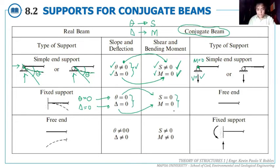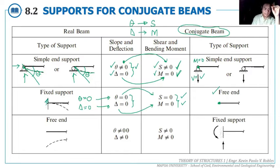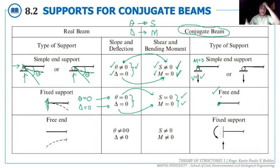Therefore, when you have a fixed support in your real beam, the corresponding conjugate beam joint would be a free end. That is how we identify the conjugate beam given the real beam.